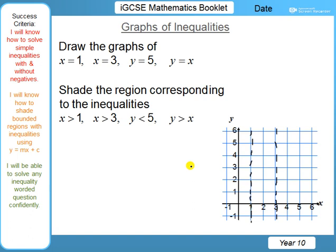If x equals 1 and x equals 3 are vertical lines, what would y equals 5 look like? Hopefully you all got the right answer — y equals 5 is a horizontal line going across from 5. Well done if you got that. Now y equals x is slightly more difficult. It basically means that y and x have to be the same number: 1,1 — 2,2 — 3,3 and so on. We get a diagonal line going at 45 degrees all the way up to 6,6. Don't forget to go all the way down as well.